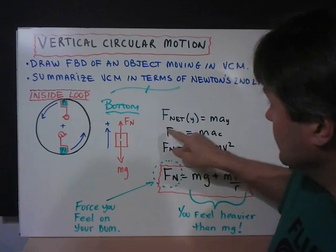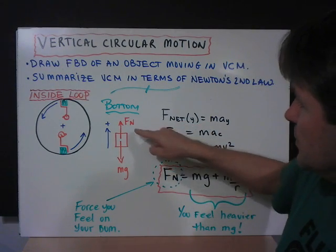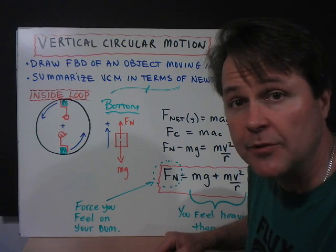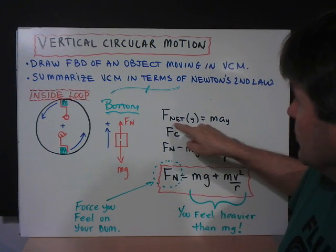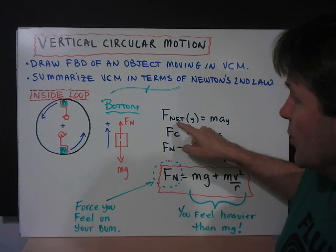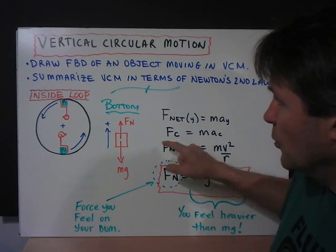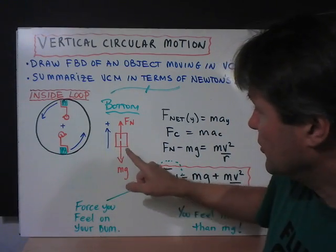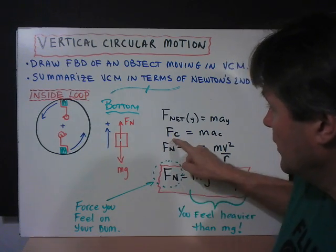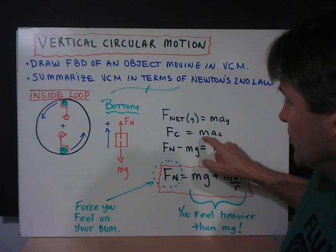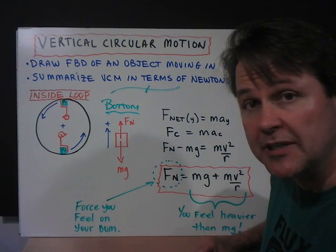If we take this free body diagram and analyze it in terms of Newton's second law, we'll write force is equal to ma. We know that we need centripetal force to cause the object to move in a circle. So the centripetal force is directed towards the center. The net force is the centripetal force, and that's equal to mass times the centripetal acceleration.